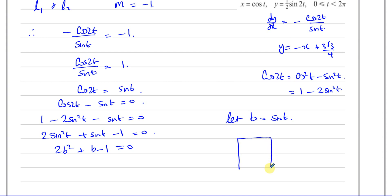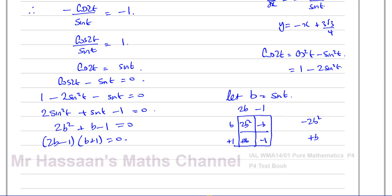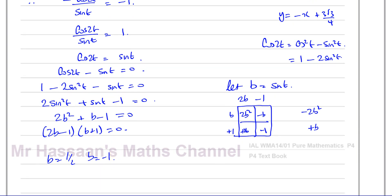We have 2b² with coefficient product minus 2b², and the b coefficient is plus 1b. So we split as plus 2b minus b: factoring gives (2b minus 1)(b plus 1) equals 0. Therefore b equals a half or b equals minus 1.